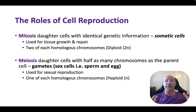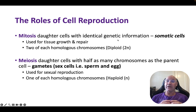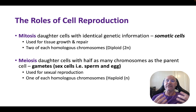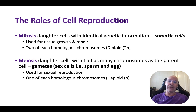So the role of cell reproduction. We have two processes: mitosis and meiosis. Mitosis occurs when we're producing daughter cells with identical genetic information, basically making somatic cells or body cells. We do this for growth and repair and development of the embryo and the fetus.